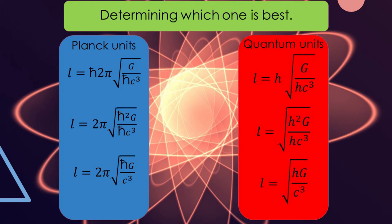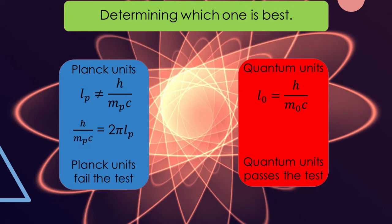Each side requires a little simplification, resulting in the bottom formulas. In both cases, the radical and what it contains are the units of length. What it shows is that with the Planck units, the wavelength formula does not equal Planck length — instead it equals 2π times Planck length. This means the Planck units failed the test. However, with the quantum units, the wavelength formula exactly equals quantum length, meaning these units passed the test.